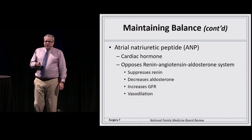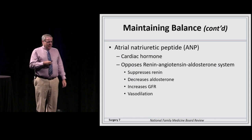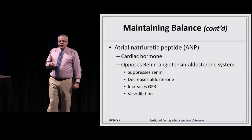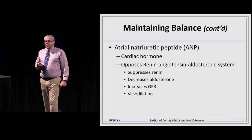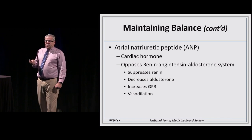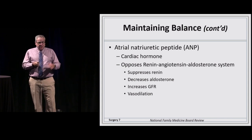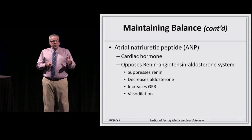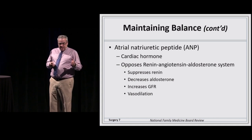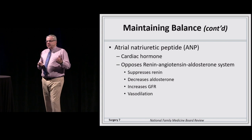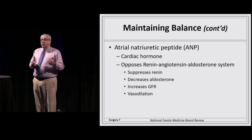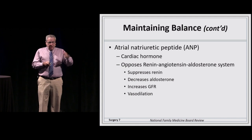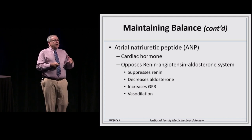Angiotensin II also goes to the adrenal gland, stimulating production of aldosterone, which acts to retain sodium and water — boosting blood pressure when it's low. This is balanced by atrial natriuretic peptide, a cardiac hormone that does the opposite: suppresses renin production, decreases aldosterone, increases glomerular filtration rate causing more fluid loss through the kidney, and causes vasodilation.